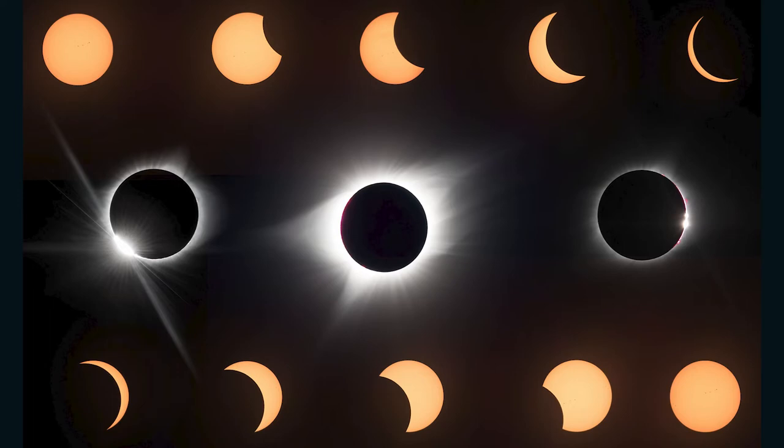A solar eclipse is an infrequent event that occurs when the Earth moves into the shadow behind a new moon, preventing sunlight from reaching the Earth. At totality, the solar corona becomes visible. The corona has a temperature of 1 to 10 million degrees centigrade — far hotter than the surface of the Sun, whose temperature is 5,600 degrees centigrade. The next full solar eclipse visible in central Texas will be in April of 2024.